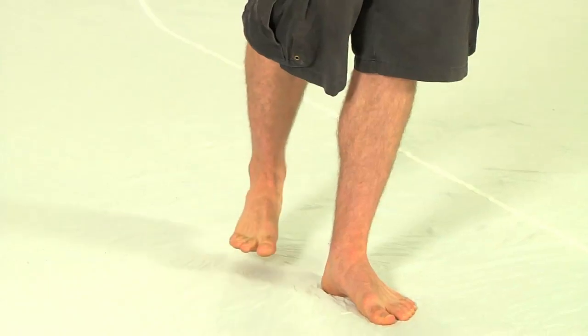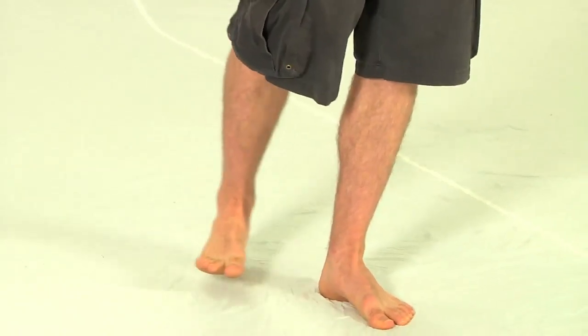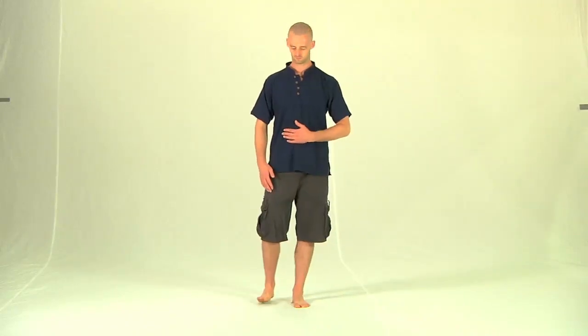Now the figure of eight, one, two, three, four, and then the Mobius strip, which is a horizontal figure of eight. And then foot back on the ground. Excellent.